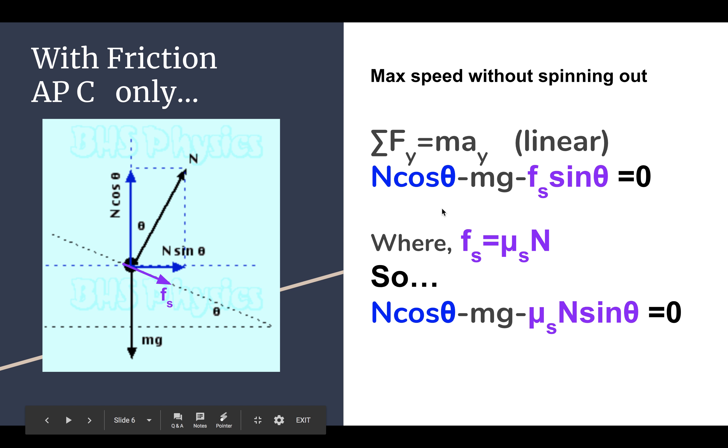So again, if we're looking for that maximum speed, it gives us our permission to use Fs max, and that is going to be equal to our coefficient of static friction times the normal force. So plugging this piece right into here, we get an expression for equilibrium for perpendicular to the plane of the circular motion. So this is what it looks like here.